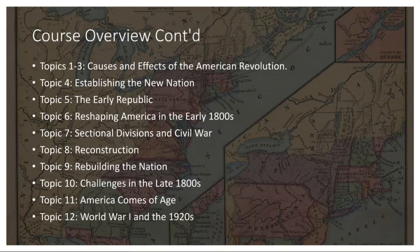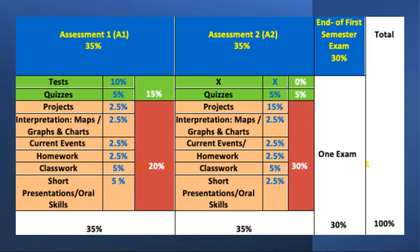Before we end, I would like to show you a slide of the assessment policy. Each semester or term is split into two parts, called Assessment 1 and Assessment 2. Each assessment is made up of 35 percentage points, or 70 percent in total. Assessment 1 is a test-based type of assessment, while Assessment 2 is a project-based type of assessment. At the end of each semester we will have an exam — a midterm and a final — which will make up 30 percent of the remaining grade.